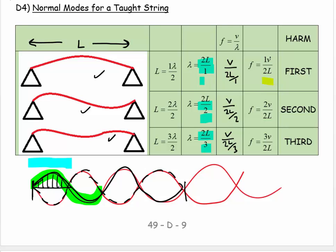Do you notice how this is v over 2L times 1, and this is v over 2L times 2, and this is v over 2L times 3?